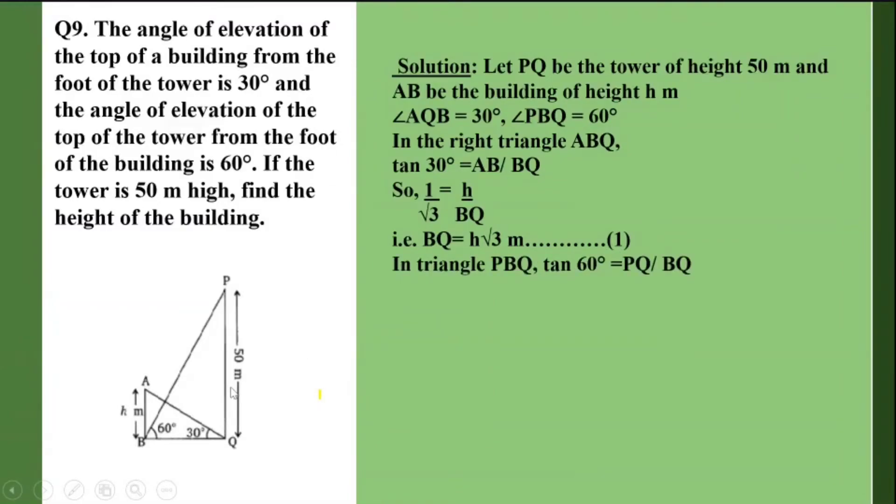triangle PQB. In triangle PQB, if I take tan 60, tan 60 will be equal to PQ upon BQ. Tan 60 is root 3. Root 3 equals 50 upon BQ.